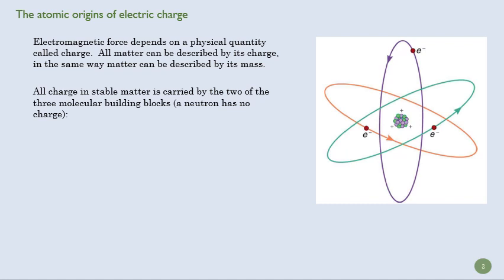All charge in stable matter is carried by electrons and protons, two of the three molecular building blocks. And each of those building blocks has a unit charge. An electron has a negative unit charge, QE, and a proton has a positive unit charge.